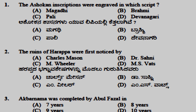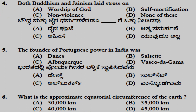The first question: the Ashokan inscriptions were engraved in Brahmi script. The ruins of Harappa were first noticed by Charles Mason. Akbar Nama was completed by Abul Fazl in seven years. Both Buddhism and Jainism laid stress on non-violence.